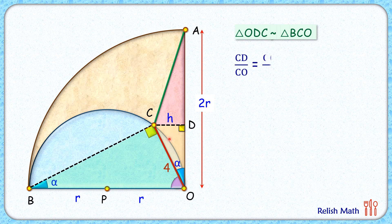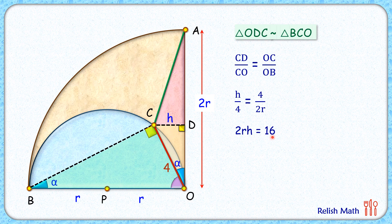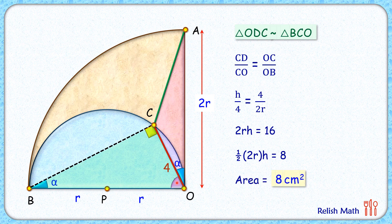From the similar triangles, the ratio of corresponding sides gives us: CD/OC = OC/OB, where CD = h and OC = 4 centimeters, and OB = 2r. Cross-multiplying gives 2rh = 16. Dividing both sides by 2 gives half of 2r times h equals 8. Since 2r is the base and h is the height, the area of the red triangle is 8 centimeters squared.